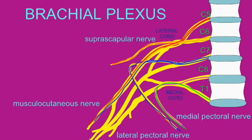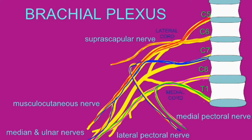The musculocutaneous nerve innervates the biceps and brachialis, which flex the forearm. The median and ulnar nerves serve the wrist and finger flexors and allow for sensation in the arm.